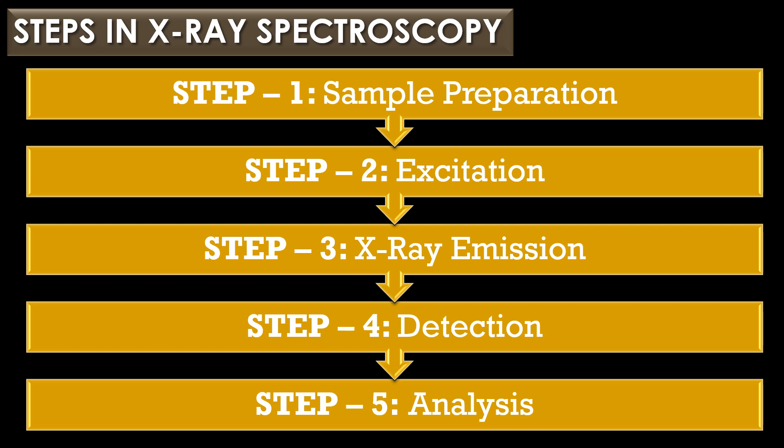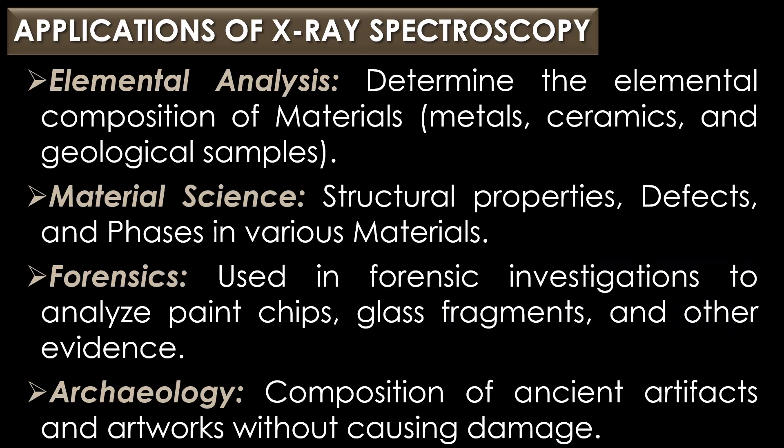In elemental analysis, X-ray spectroscopy is used to determine the elemental composition of materials, especially in metals, ceramics, and geological samples. In material sciences, it is used to study the structural properties, defects, and phases in various materials. In forensic science, X-ray spectroscopy is used in forensic investigations to analyze paint chips, glass fragments, and other evidence.